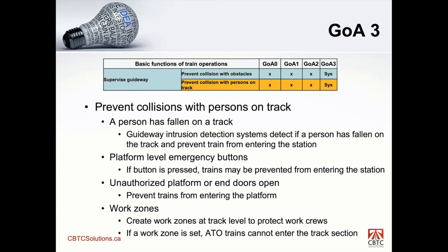Work zones also protect crews. If a work zone is set, an ATO train cannot enter that track section — it will come to a stop. The driver or operation staff would then change to manual mode and move through that section of track while observing that there are no personnel in front of the train as it traverses that part of the track. These are the types of functions that need to be implemented to satisfy the GOA 3 requirement.